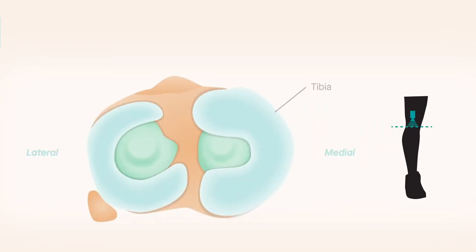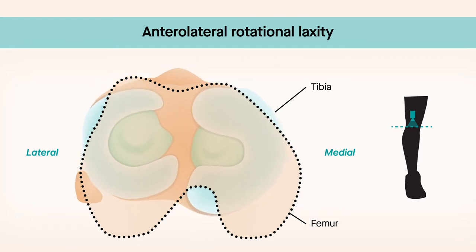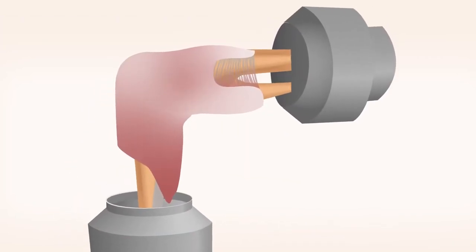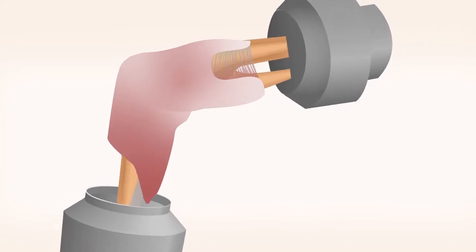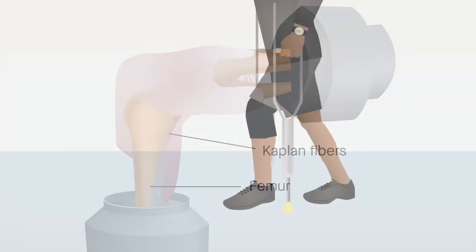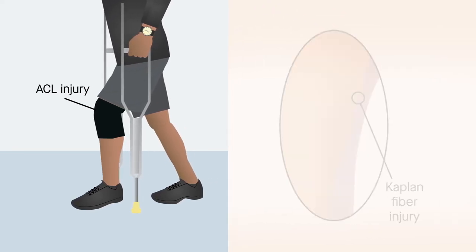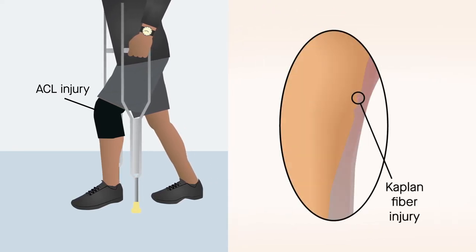One of the goals of ACL reconstruction surgery is to eliminate anterolateral rotational laxity of the knee. Biomechanical studies have shown that rotational control of the knee is largely controlled by the iliotibial band, specifically the Kaplan fibers, that anchor the band to the distal femur. Despite this critical connection, it remains unclear how often the iliotibial band and Kaplan fibers are compromised in association with ACL injury.